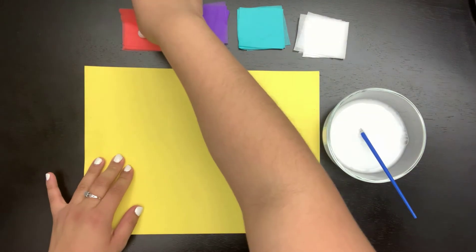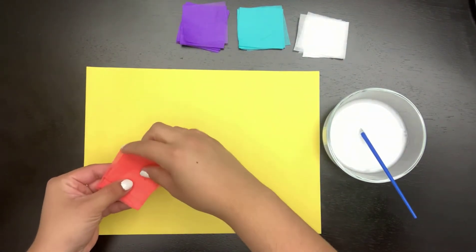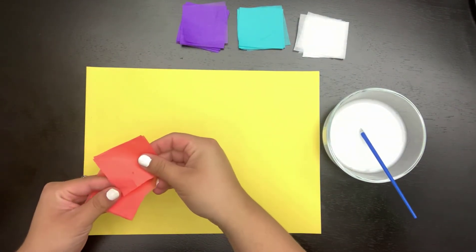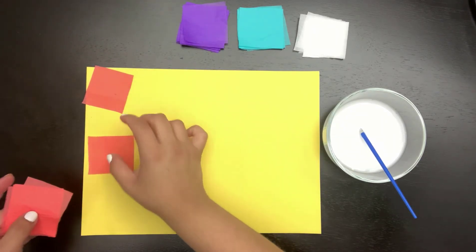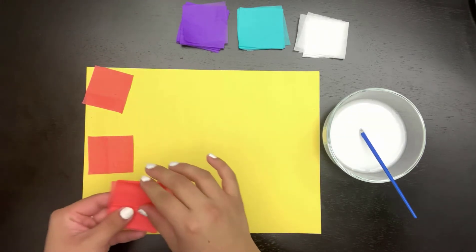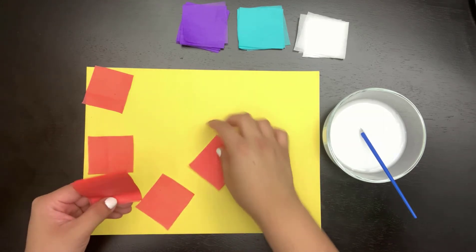Encourage your child to use as many colorful tissue paper squares as they would like. You can also have them count how many squares of each color they want to use and have them place them all over their construction paper.